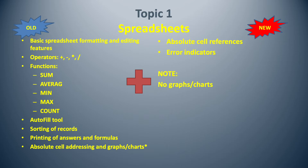Although not included in the old curriculum, absolute cell addressing and graphs or charts were asked in the exam papers. The 2021 syllabus includes all the old learning outcomes except graphs or charts, plus the following new learning outcomes: absolute cell references and error indicators.